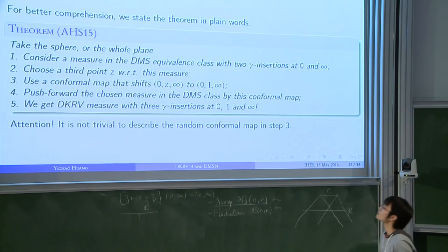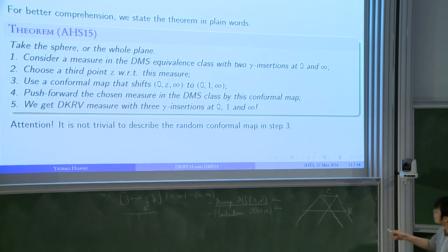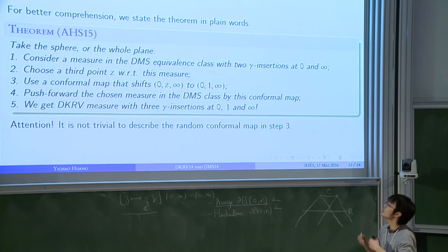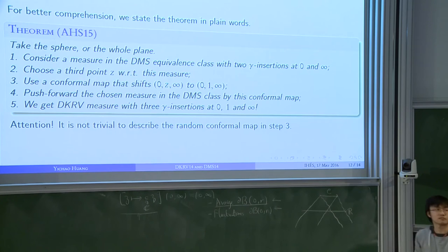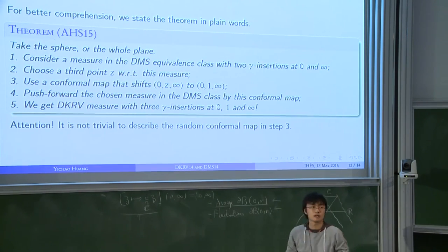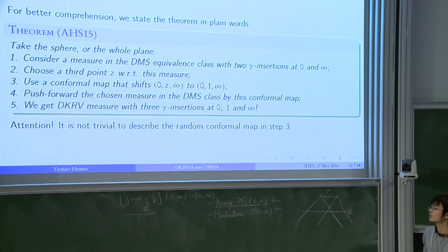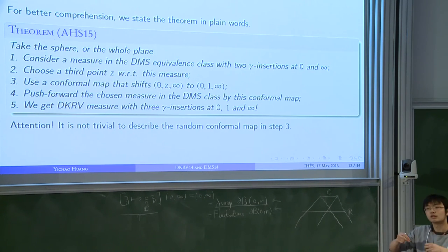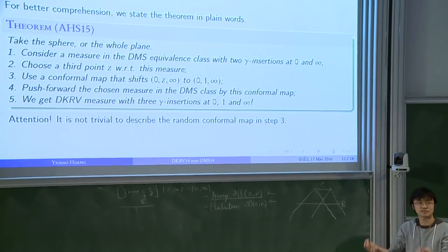So our theorem is the following. We can pass from the two-point definition to the three-point definition, or we can pass from the three-point definition to the two-point definition. To explain this, I'll use some intuition from the random map. I recall that the two-point case should correspond to the case where you pick two vertices on your random map and you embed it to the sphere, and the three-point case should correspond to where you choose three vertices and you embed it to the sphere.